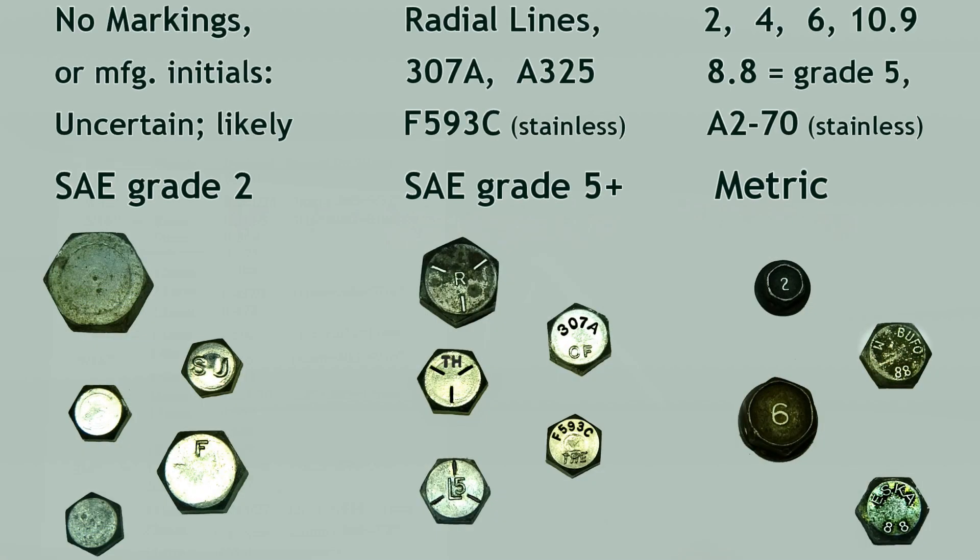Bolt head markings can get complex and often have a manufacturer's initials on them. If you see radial lines, it's SAE, also known as standard or imperial. If it has a number like 6 or 8.8, it's metric.